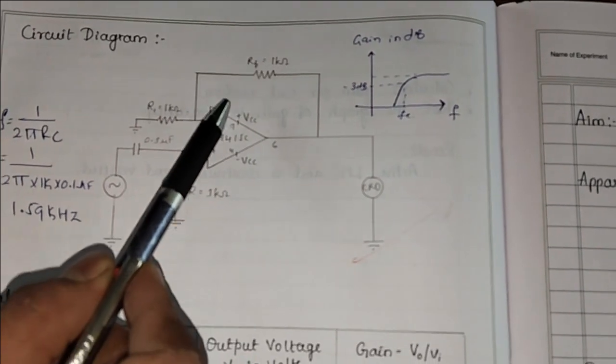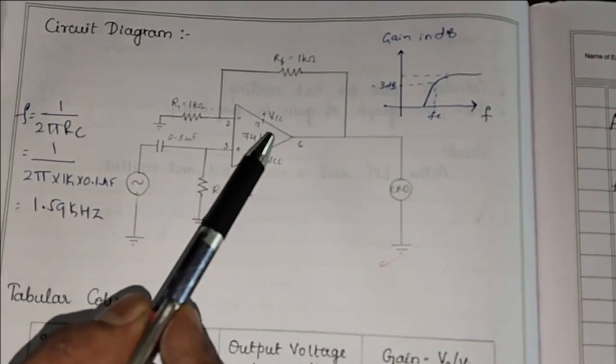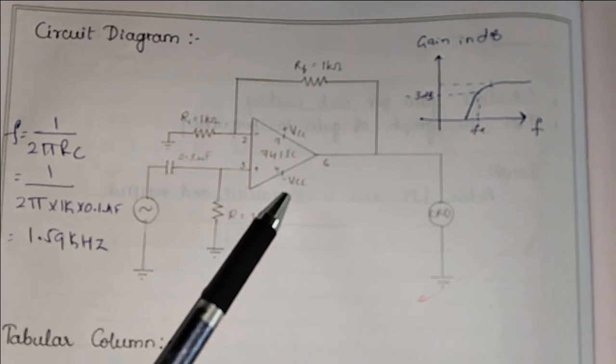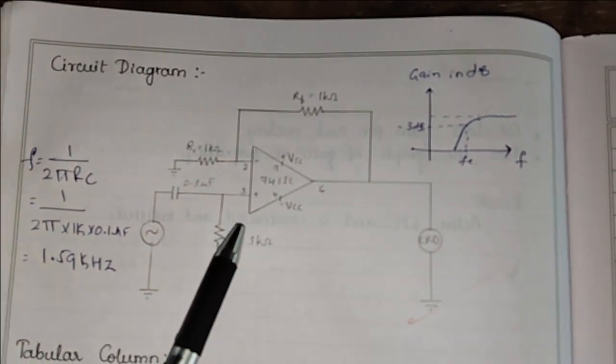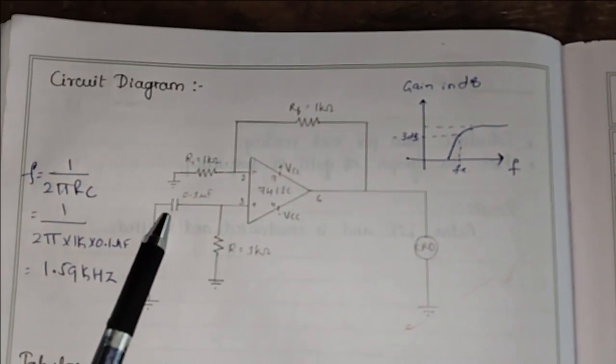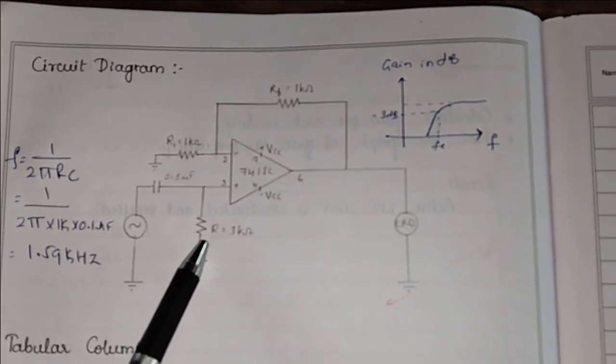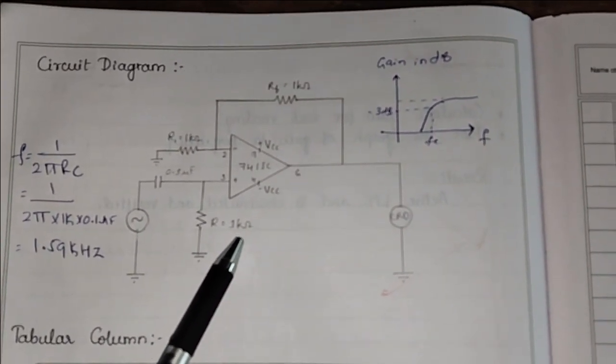Here we have given plus VCC and minus VCC. Plus VCC is given to pin number 7 and minus to pin number 4. And at pin number 3 we have connected a capacitor C which is of 0.1 microfarad and resistor R which is of 1 kilo ohm.